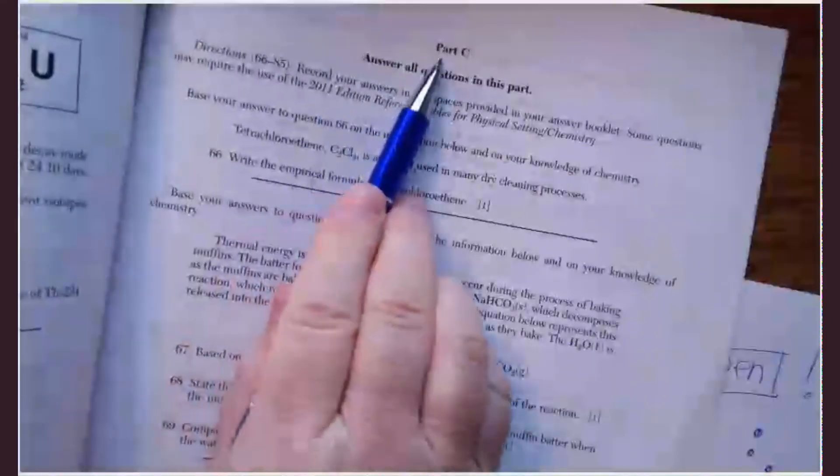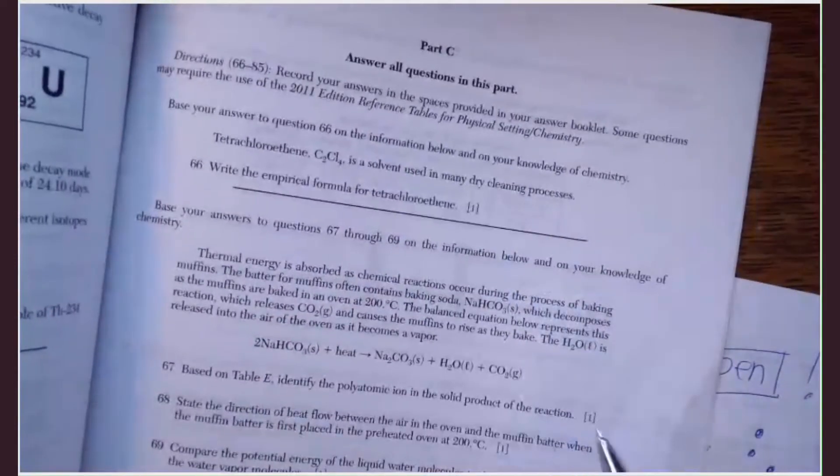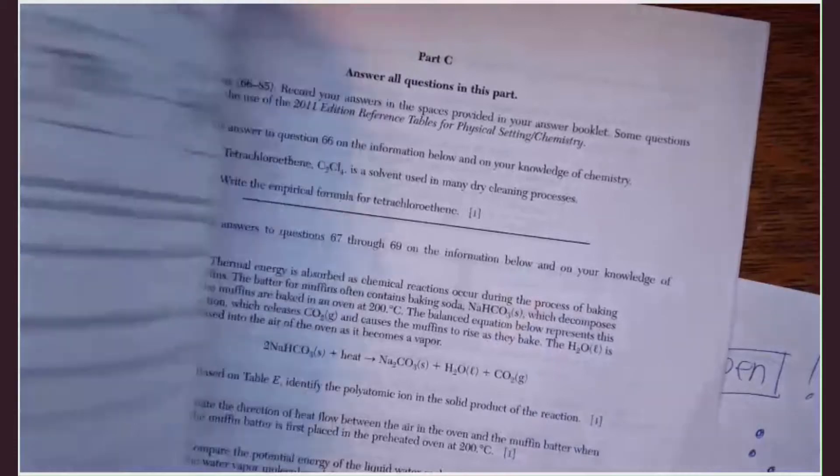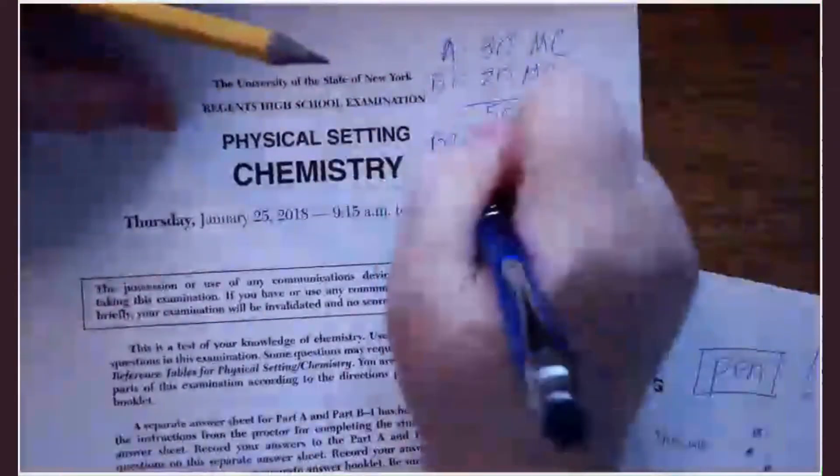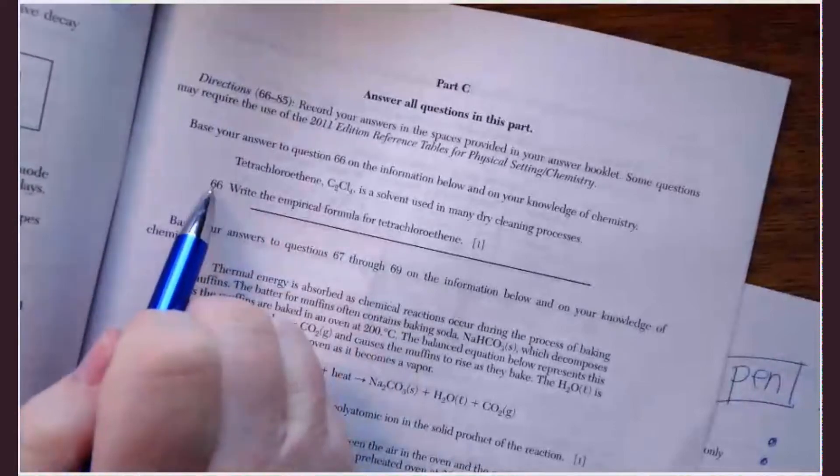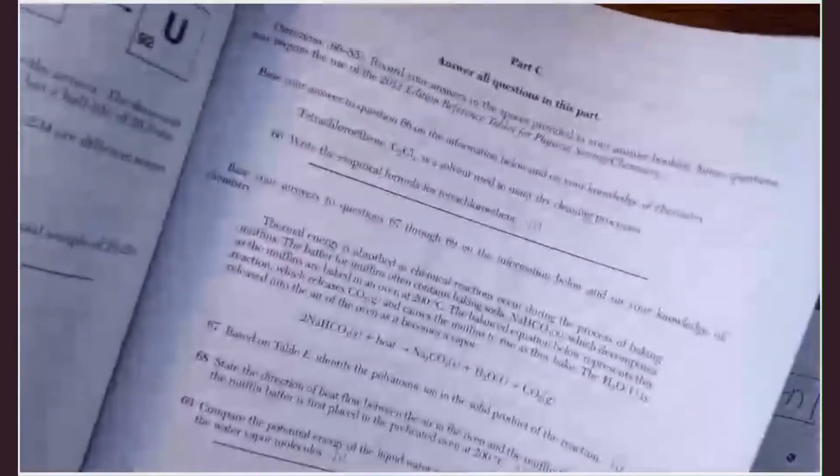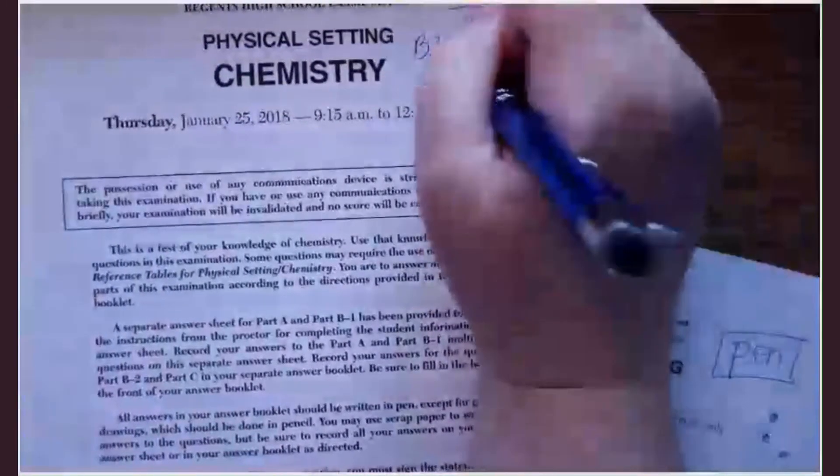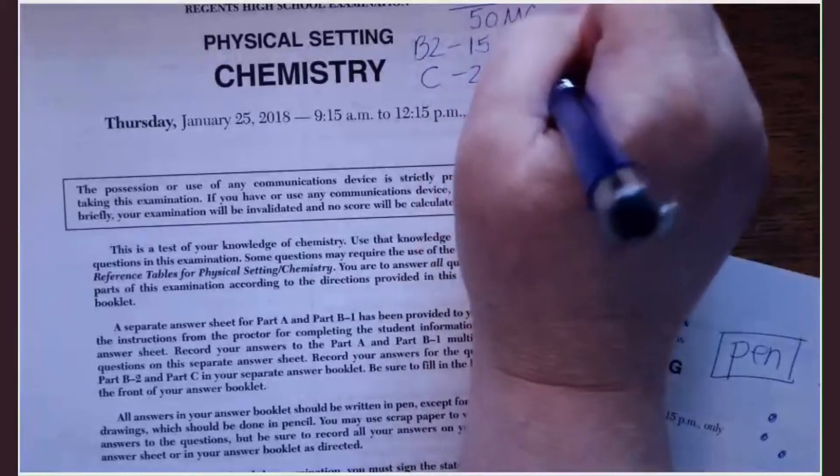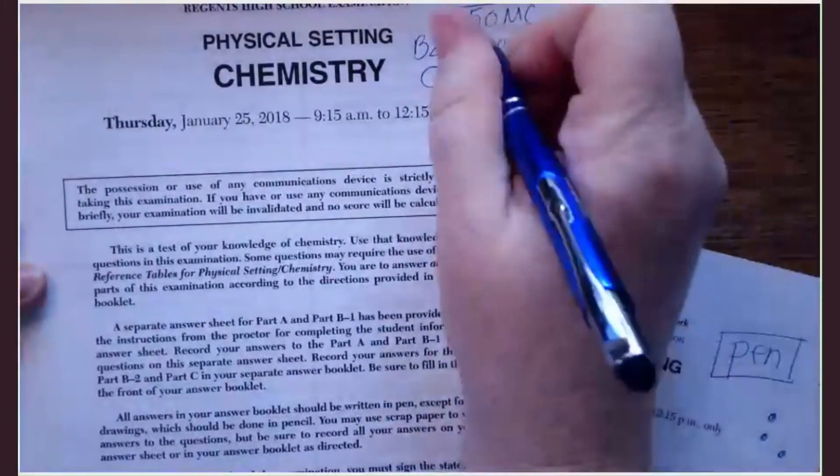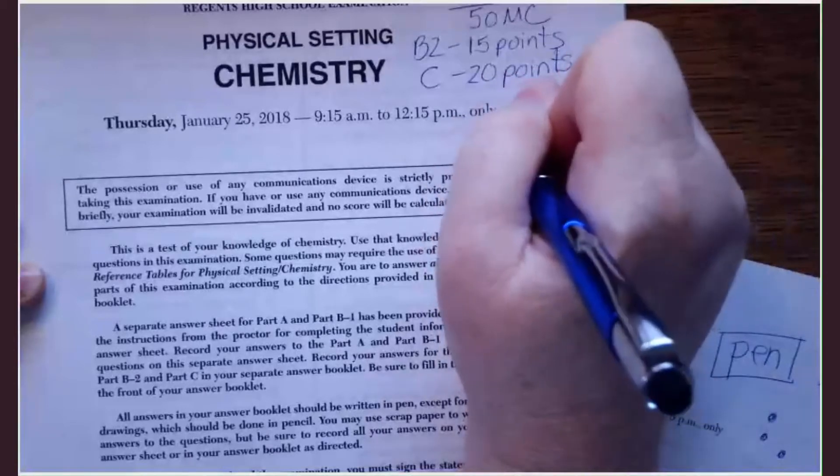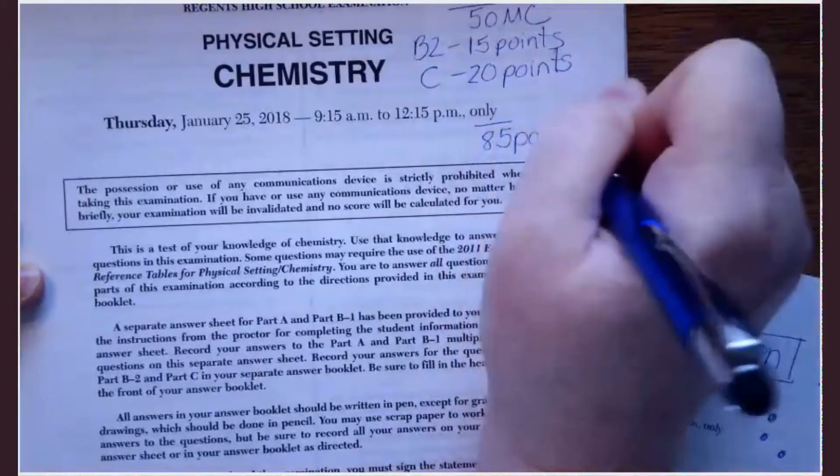And then finally, we have part C. Again, you will see a similar setup. So these are written answers. So then we have C, and this starts with question 66. And we continue in C, and we get to question 85. That's how I know each question was only worth one point. So I got all the way to 85. So part C is going to be 20 points. So all told, it is 85 points.